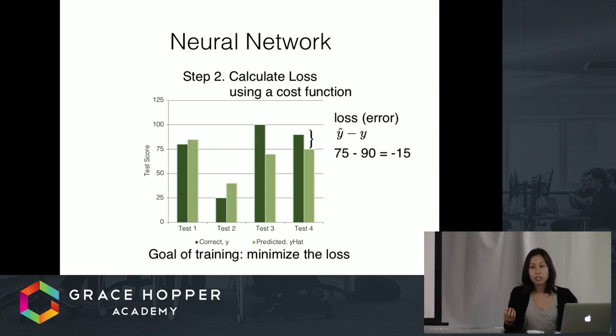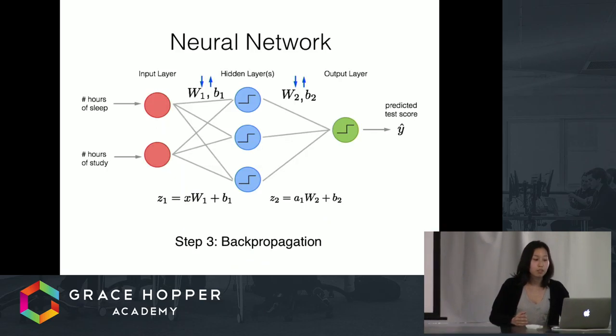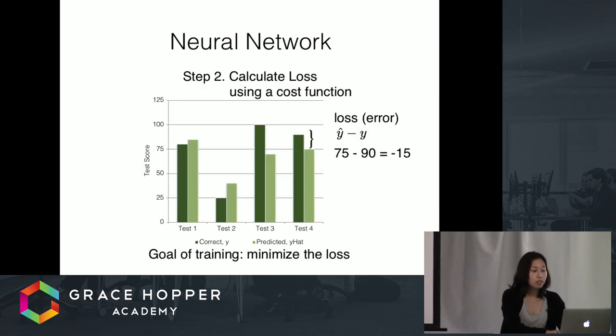As we take a guess, it could be off by the correct input. That's what we call the loss or the error. The loss is basically the correct answer minus the predicted output. By having that loss, we're going to want to minimize it. That means we want to make sure that the predicted output from the neural network is going to closely match the correct output.